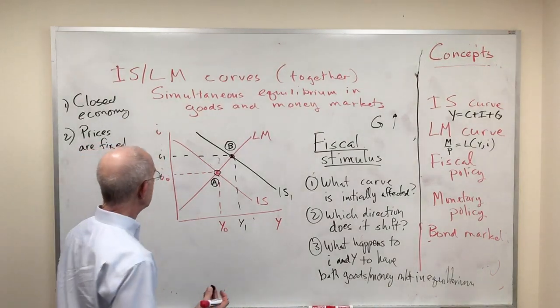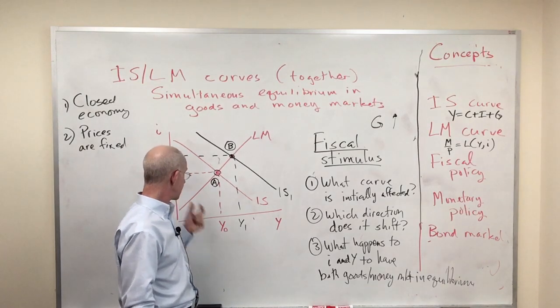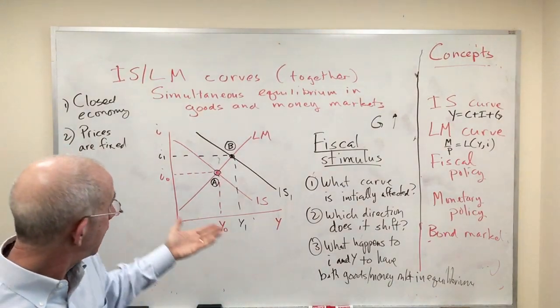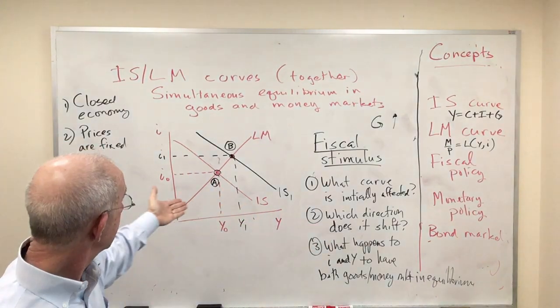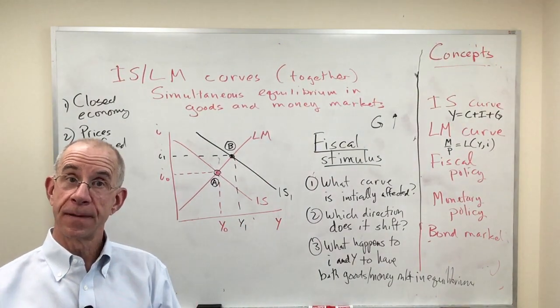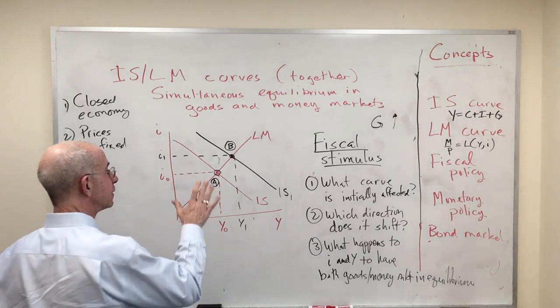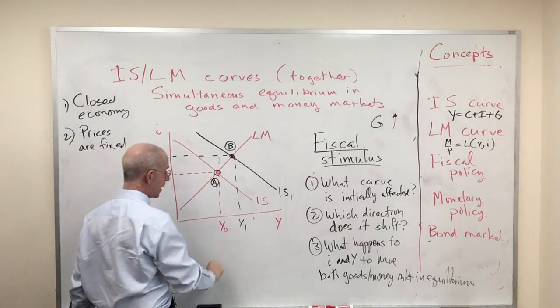So, a decrease in tax rate would give you similar kinds of results. So, if you found yourself at an equilibrium at an interest rate of I zero and Y zero, you're in a recession, government can stimulate the economy by higher government spending, lower taxes, but it comes at the cost of higher interest rates. So that's the first use of the combination of these two.